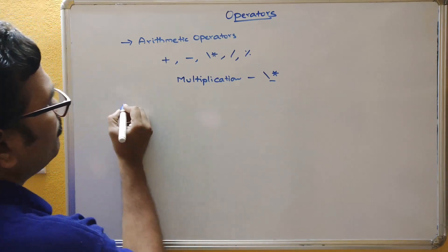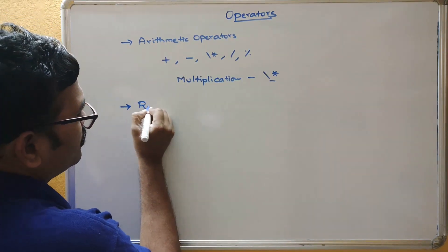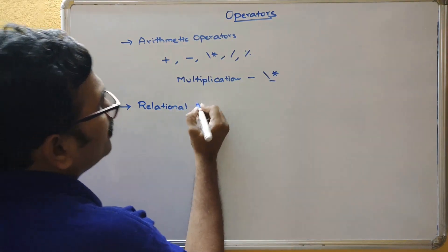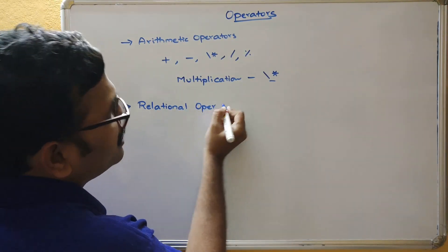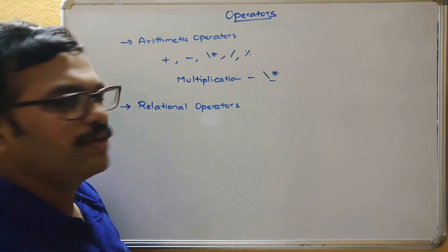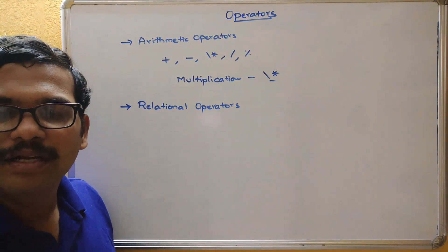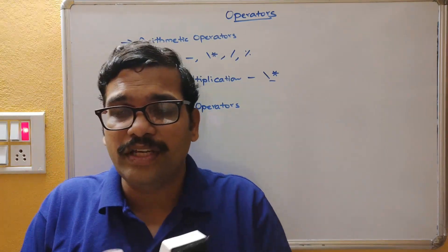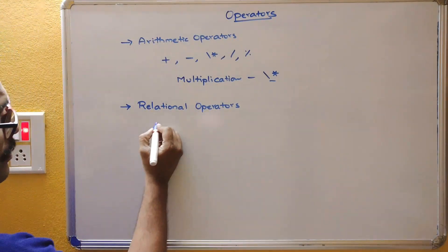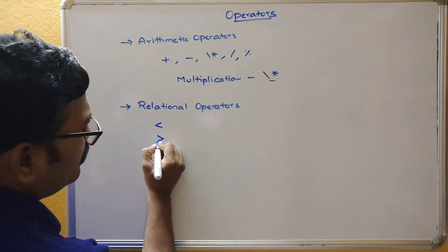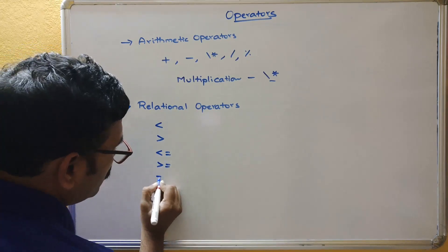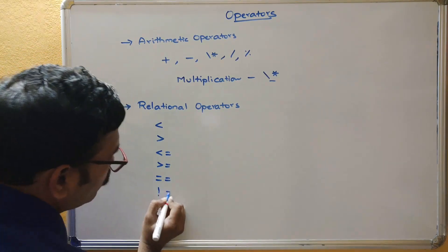The next one is relational operators. Relational operators are used in conditions — whenever we are supposed to write conditions, we use relational operators. They define the relation between operands: less than, greater than, less than or equal to, greater than or equal to, double equals (equal to), and not equal to.